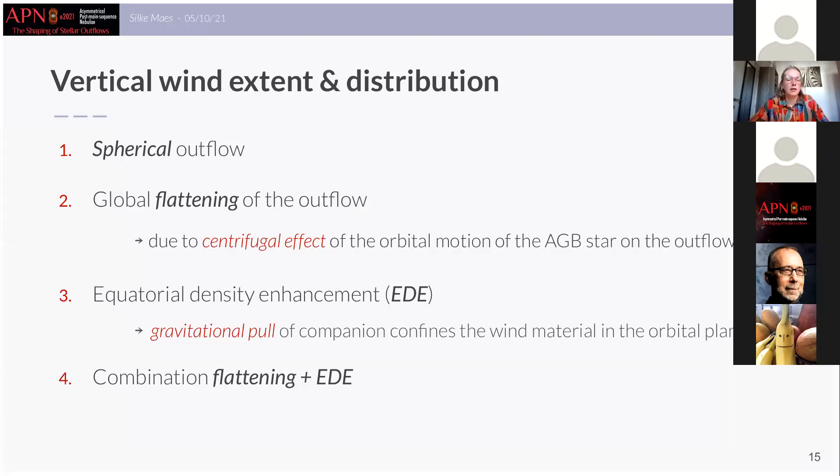The other compressed signature is what is called an equatorial density enhancement or EDE, and this differs from the flattening as it is the result of the gravitational pull of the companion on the HB wind and this makes that wind material is confined in the orbital plane. Then the last signature that we saw on the previous slide was actually a combination of this flattening and an EDE.